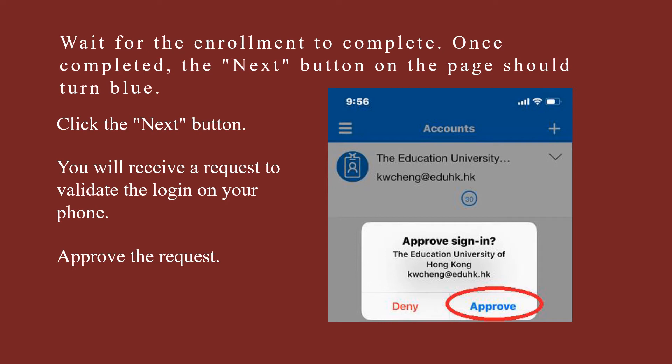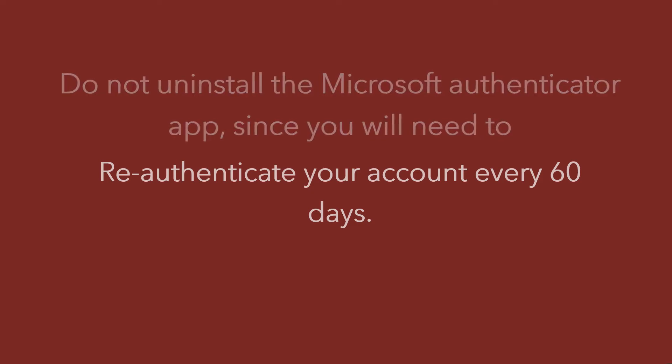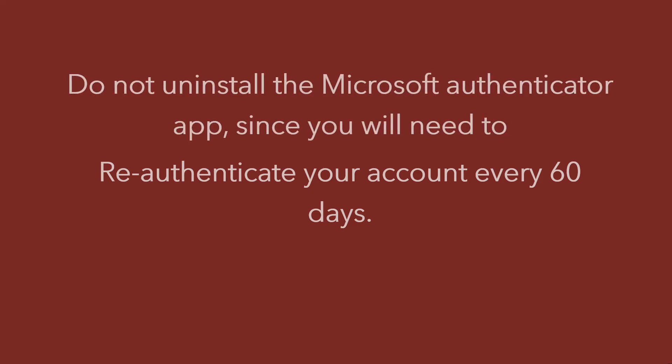The next page will ask you to approve a login, and you should click Approve on the bottom right. That's it — you're done. Just don't delete the Microsoft Authenticator app from your smartphone, as it will ask you to re-authenticate every 60 days. If you accidentally delete the app or get a new phone, please contact IT so we can reset your account. We'll tell you when it's cleared and you can follow the above steps again.